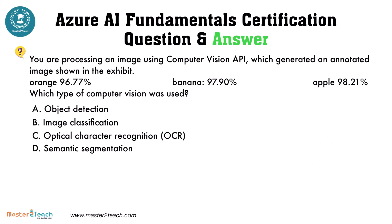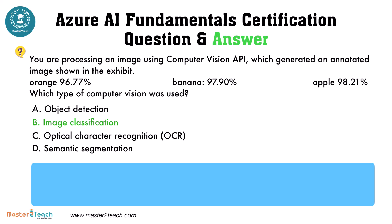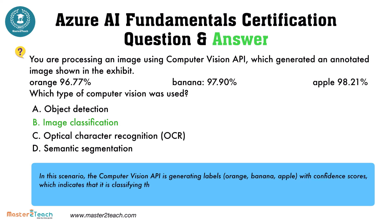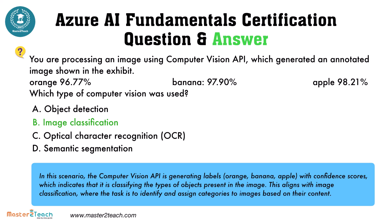The correct answer is Image Classification. In this scenario, the Computer Vision API is generating labels — Orange, Banana, Apple — with confidence scores, which indicates it is classifying the types of objects present in the image. This aligns with Image Classification, where the task is to identify and assign categories to images based on their content.